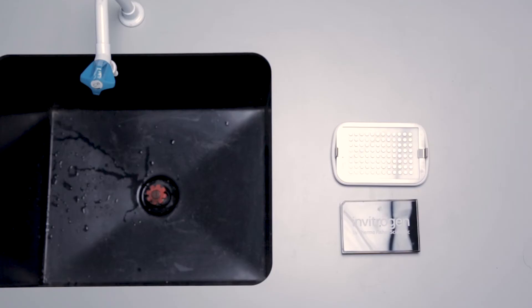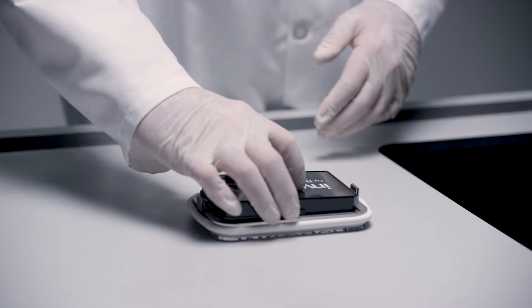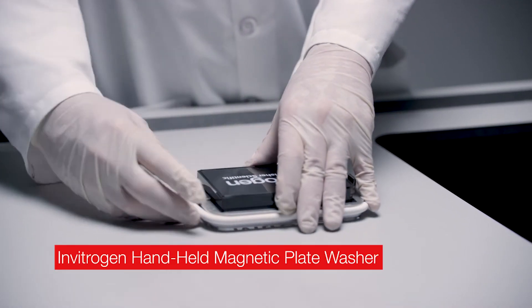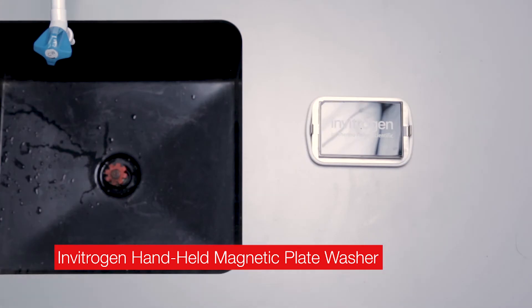For optimal performance, we recommend using the 96-well flat bottom plate that is provided with the ProcardiPlex assay. Take the plate and insert it into the Invitrogen Handheld Magnetic Plate Washer and lock the clips.